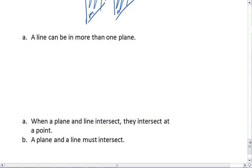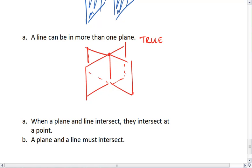Next one, a line can be in more than one plane. We already know this to be true because we know the intersection of two planes is a line. So line L lies in both planes M and N. Line L is in both of these planes. And in fact, there are infinitely many planes that will go through line L.